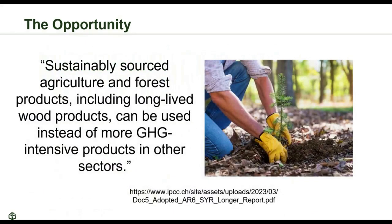The Intergovernmental Panel on Climate Change is the UN body for assessing the science related to climate change and providing regular assessments of the scientific basis of climate change, its impacts and future risks, and options for adaptation and mitigation. In the most recent AR6 report published in March 2023, the IPCC reiterated that long-lived wood products can be used instead of other more greenhouse gas intensive products as an option for mitigating climate impacts. The IPCC quote states: sustainably sourced agriculture and forest products, including long-lived wood products, can be used instead of more greenhouse gas intensive products in other sectors. To do that, we need to incorporate that kind of thinking into the codes and standards that they rely upon.